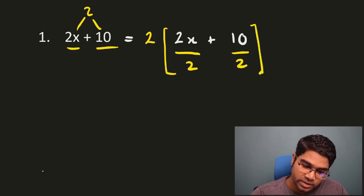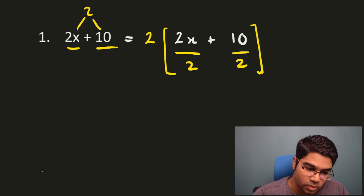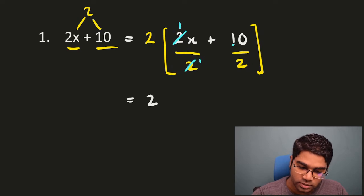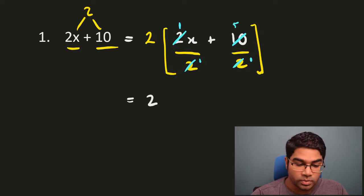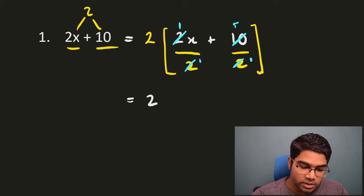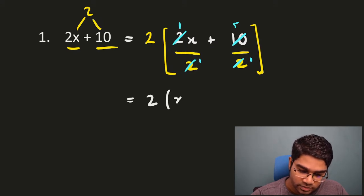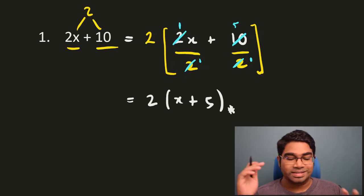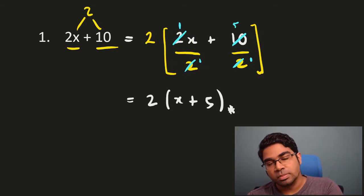So divide by 2 and divide by 2. And that's it — this is factorization. What we get is 2, and here we can simplify: 2 and 2 becomes 1, and we are left with x plus 5. This is how we perform factorization — essentially, it is division. Now let's try another simple problem.